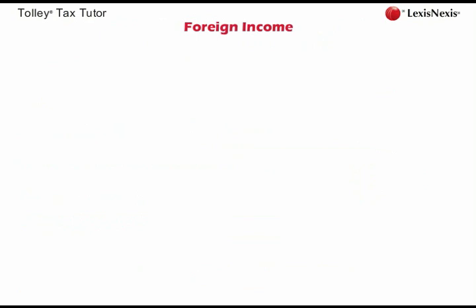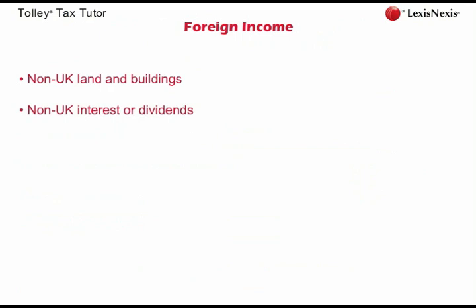An individual may have income from outside the UK. We have already seen that they may have property income from non-UK land and buildings. They may also have investment income from outside the UK, such as non-UK bank interest or non-UK dividends. All income arising outside the UK is now called foreign income. It is important to note that income can still be taxable in the UK even if it arises from a source outside the UK. As a general principle, individuals who live in the UK and who were born in the UK will pay UK income tax on their worldwide income wherever it comes from.